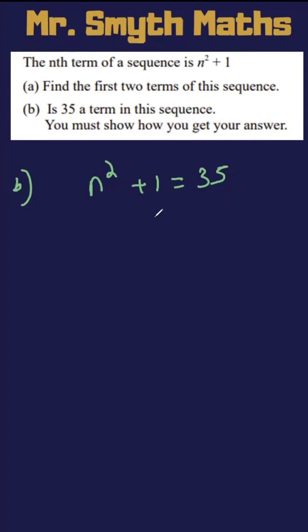So let's solve this. I've got the plus 1. Let's do the reverse and take away 1 from both sides. n squared is what's left on this side. On this side, we've got 34. Now to get the inverse of n squared, we're just going to square root. Let's square root both sides.